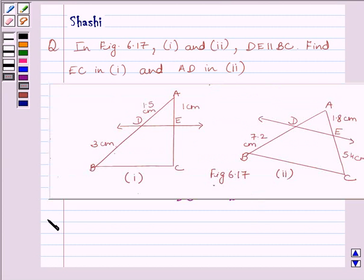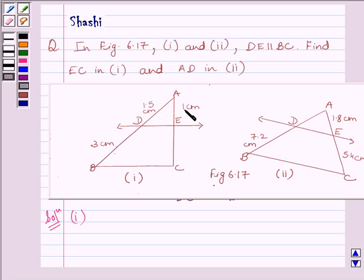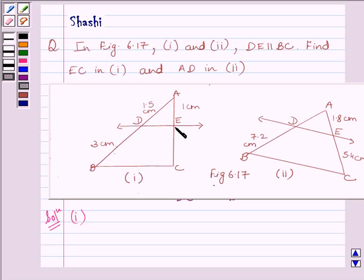Let us start the solution now. For the first part, clearly we can see DE is parallel to BC as it is given in the question. AD is equal to 1.5 cm, DB is equal to 3 cm, and AE is equal to 1 cm. We have to find EC. Since DE is parallel to BC and DE is intersecting AB and AC at two distinct points D and E, it will divide AB and AC in the same ratio. So by the basic proportionality theorem, we get AD upon DB must be equal to AE upon EC.